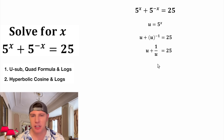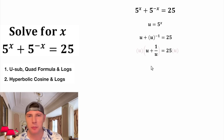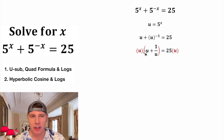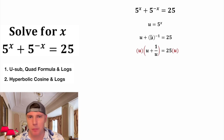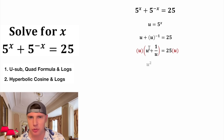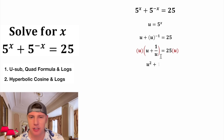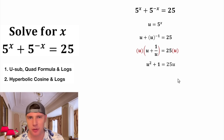I don't really like fractions, so let's get rid of this denominator. We can multiply both sides of the equation by u. On the left-hand side, this u is going to distribute to both of these terms. u times u is u squared, and u times 1 over u — the u's are going to cancel — leaving us with just 1. And then on the right-hand side, 25 times u is 25u.